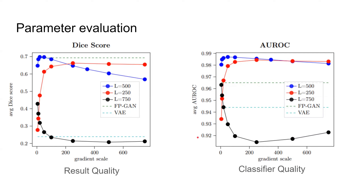Now let's talk about the parameter evaluation. We have the L parameter, which is the noise level — how many steps we add noise. Another parameter is the gradient scale S, which controls the conditional generation. For the Dice score, it evaluates how good the quality of the generated results is. For the AUROC score, it measures how good the classifier is, and since our model is highly dependent on classifier quality, the AUROC is very important, especially for this conditional generation.